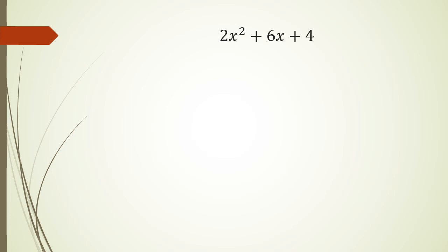You see, you've got 2, 6, and 4. Now 2, 6, and 4 are all multiples of 2, so potentially you could take 2 out as a common factor, which means you're going to have x squared plus 3x plus 2.